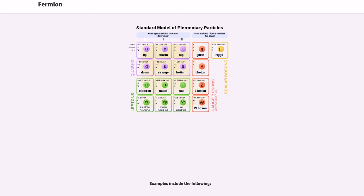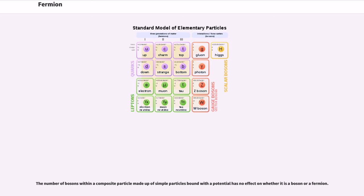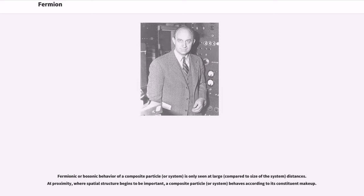Examples include the following. The number of bosons within a composite particle made up of simple particles bound with a potential has no effect on whether it is a boson or a fermion. Fermionic or bosonic behavior of a composite particle or system is only seen at large, compared to size of the system, distances. At proximity, where spatial structure begins to be important, a composite particle or system behaves according to its constituent makeup.